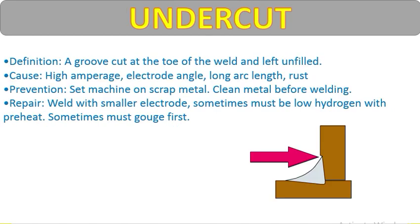Undercut is defined as a groove cut at the toe of the weld left unfilled. You can see the parent metal has been melted and there is unfilled area coming — this is called undercut. Causes include: high amperage, incorrect electrode angle, long arc length, and rust. These four things are the main causes of undercut.